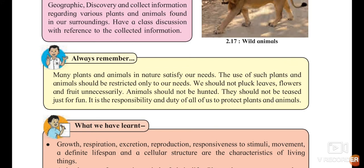Always remember: plants and animals in nature satisfy our needs. You get food from plants and animals, but the use of such plants and animals should be restricted only to our needs. You are not supposed to kill any animal or take leather from animal skin excessively. We should not pluck leaves, flowers, and fruits unnecessarily. Animals should not be hunted or teased for fun. It is our responsibility and duty to protect the plants and animals.